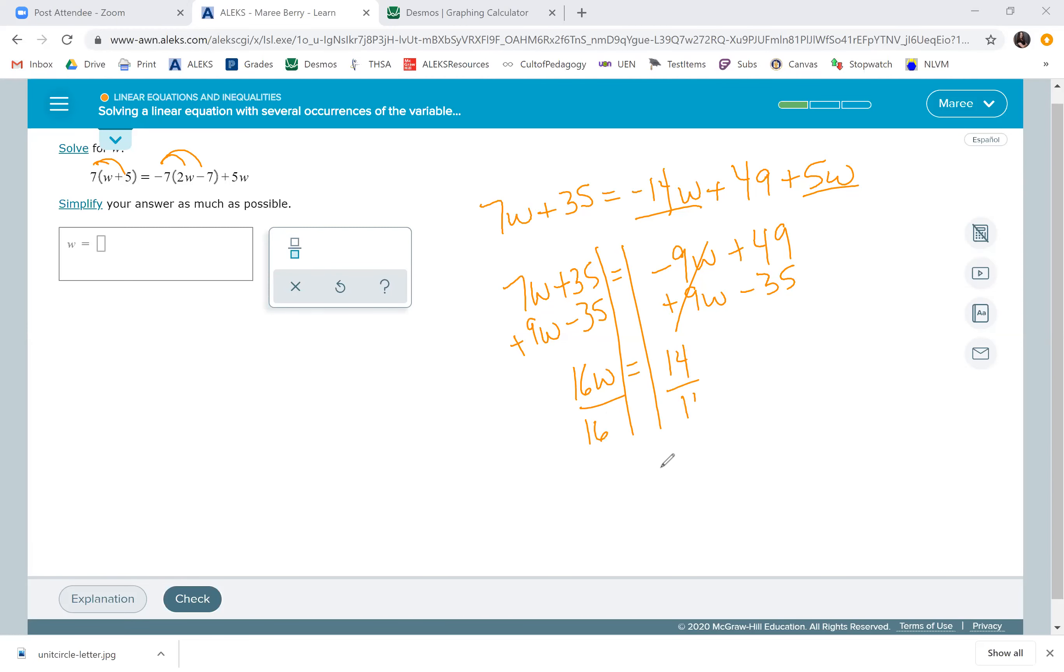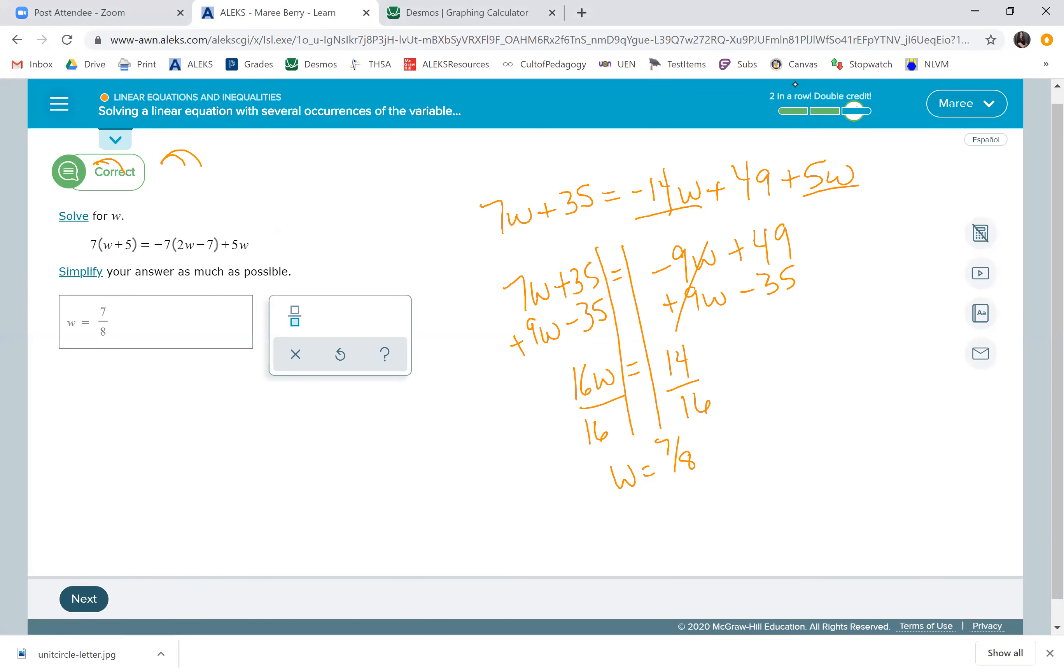That is so weird - that's 7 eighths. The last one was 8 sevenths. Probably you can see a mistake I made, that's okay. We could check by plugging in, but I don't want to do that. Perfect, that worked out great. Doesn't always do so, but that's the way it is. That's the end of the lesson, thank you.